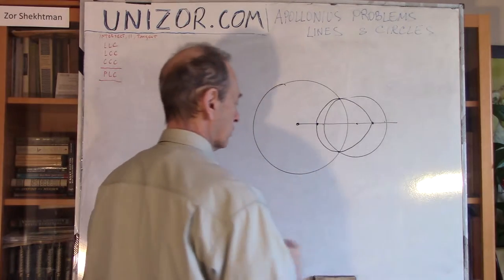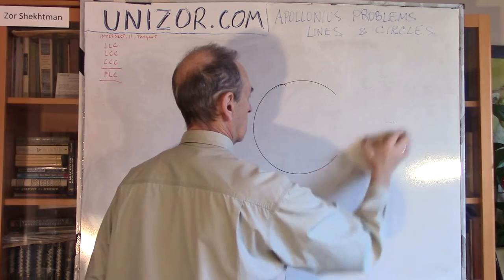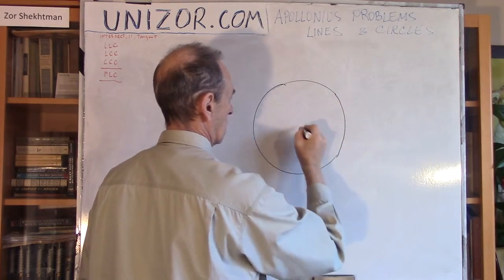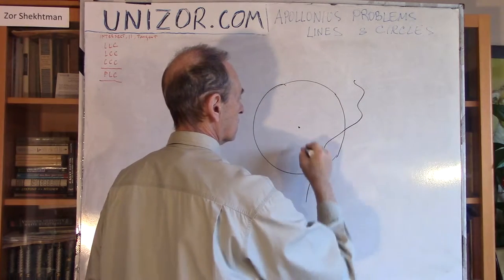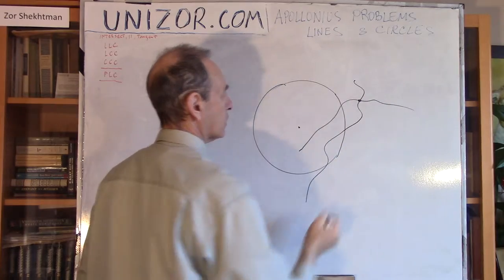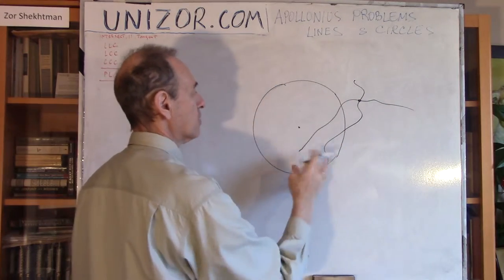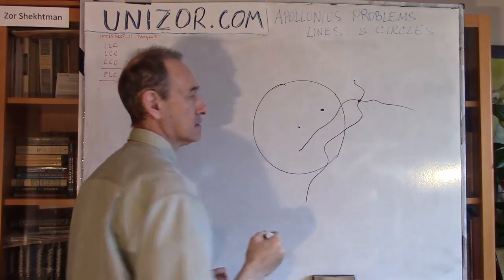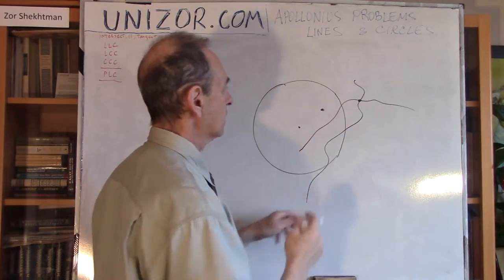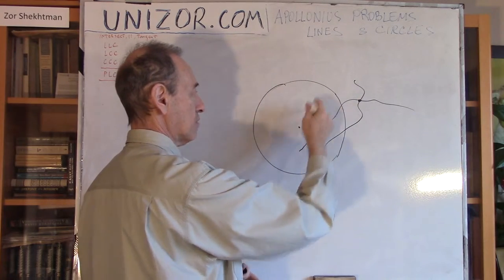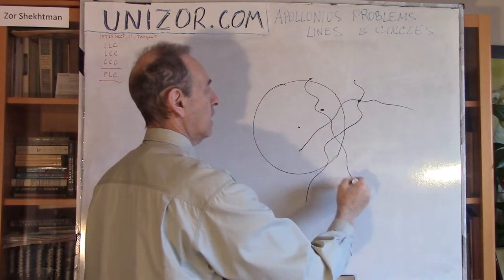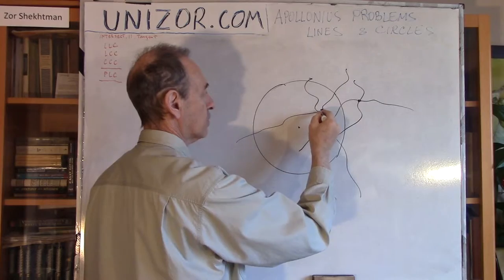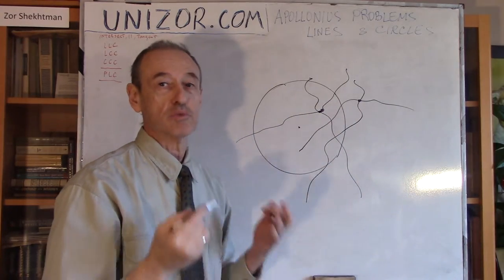If you have two lines intersecting each other at one particular point, their images would also intersect, but the intersection point would be inside. If this point belongs to this line, the image of this point belongs to the image of this line. So the image of one line would be something like this, and the image of the other line would be something like this, and the intersection will still be in one point.